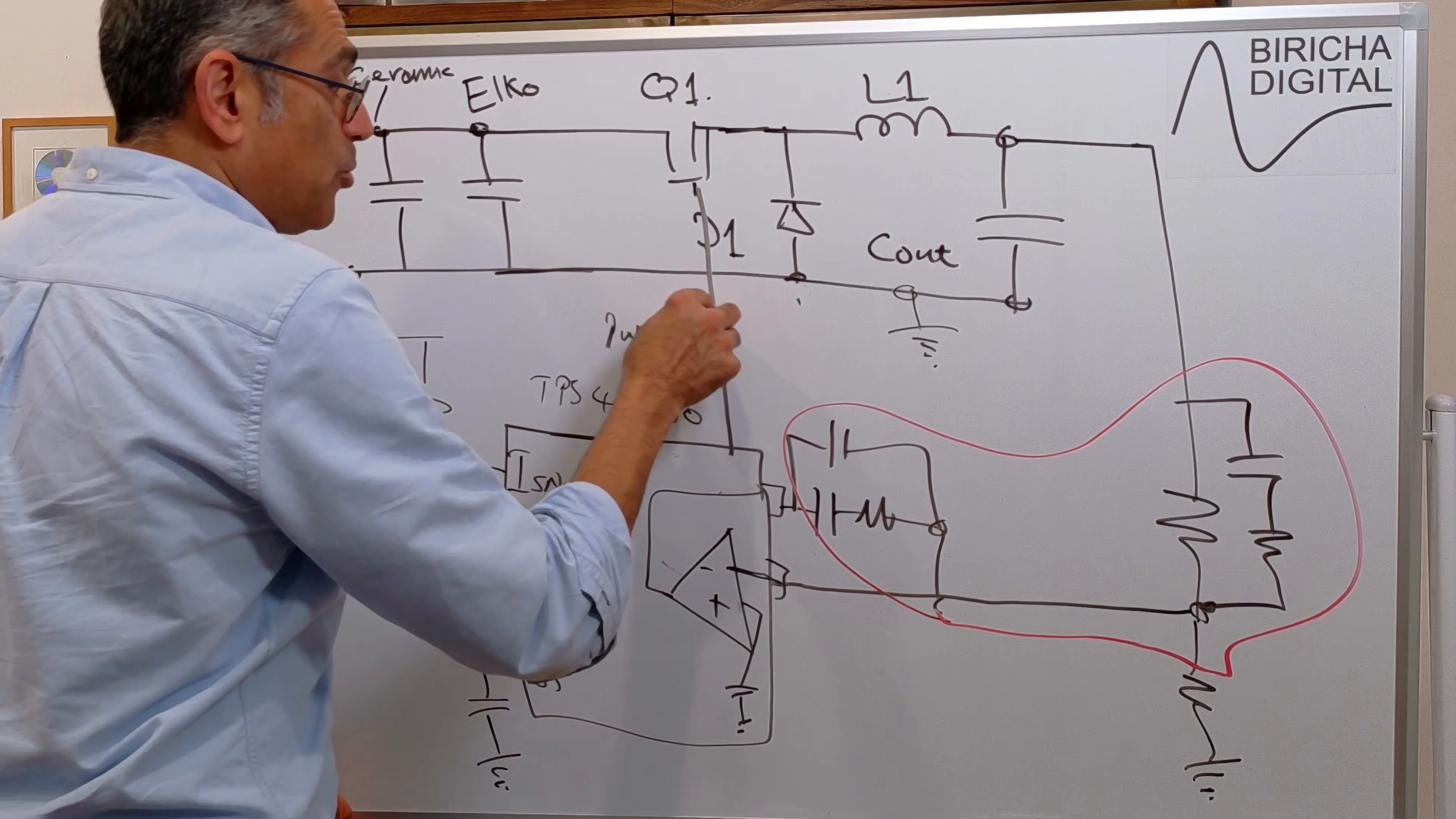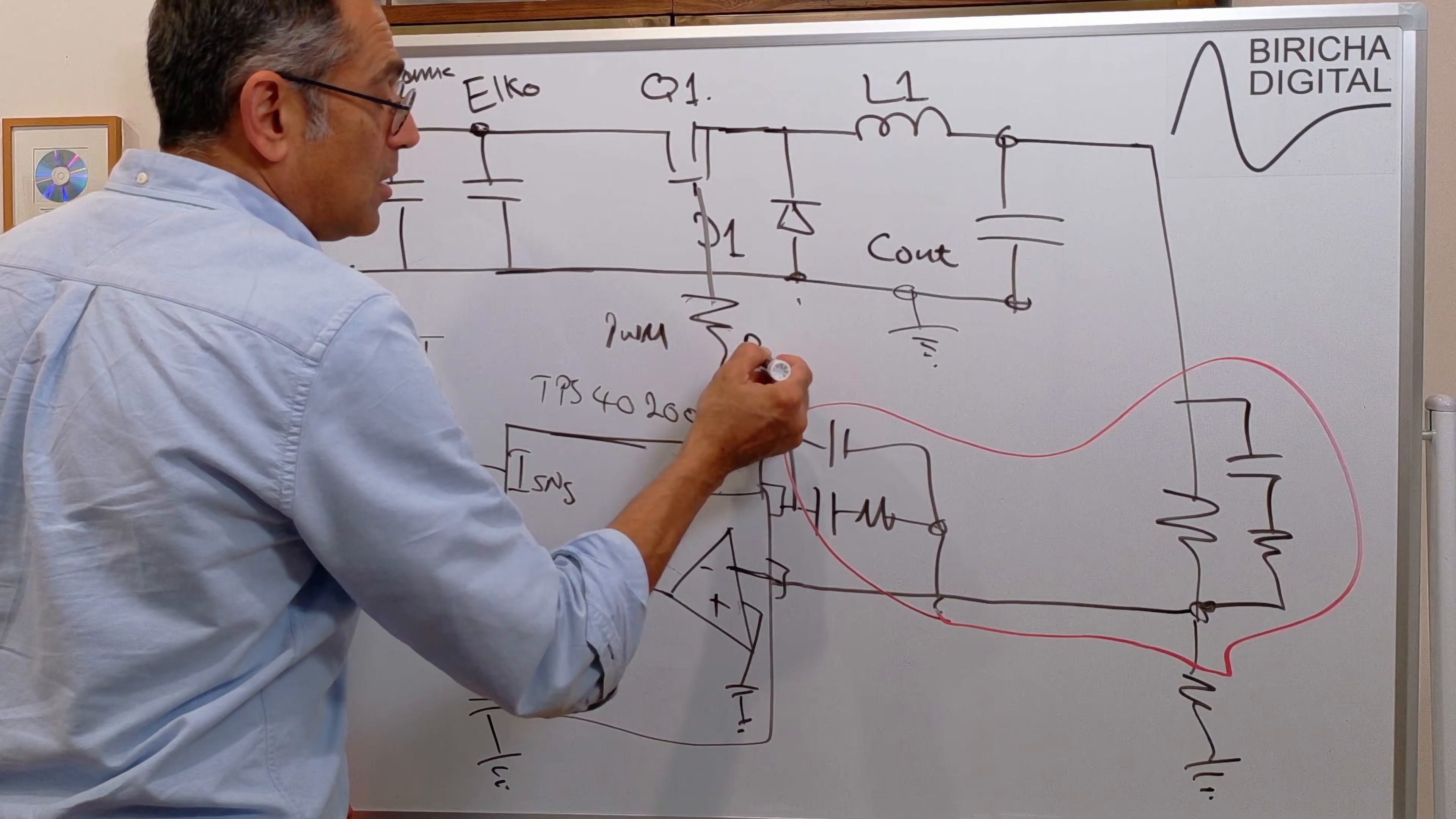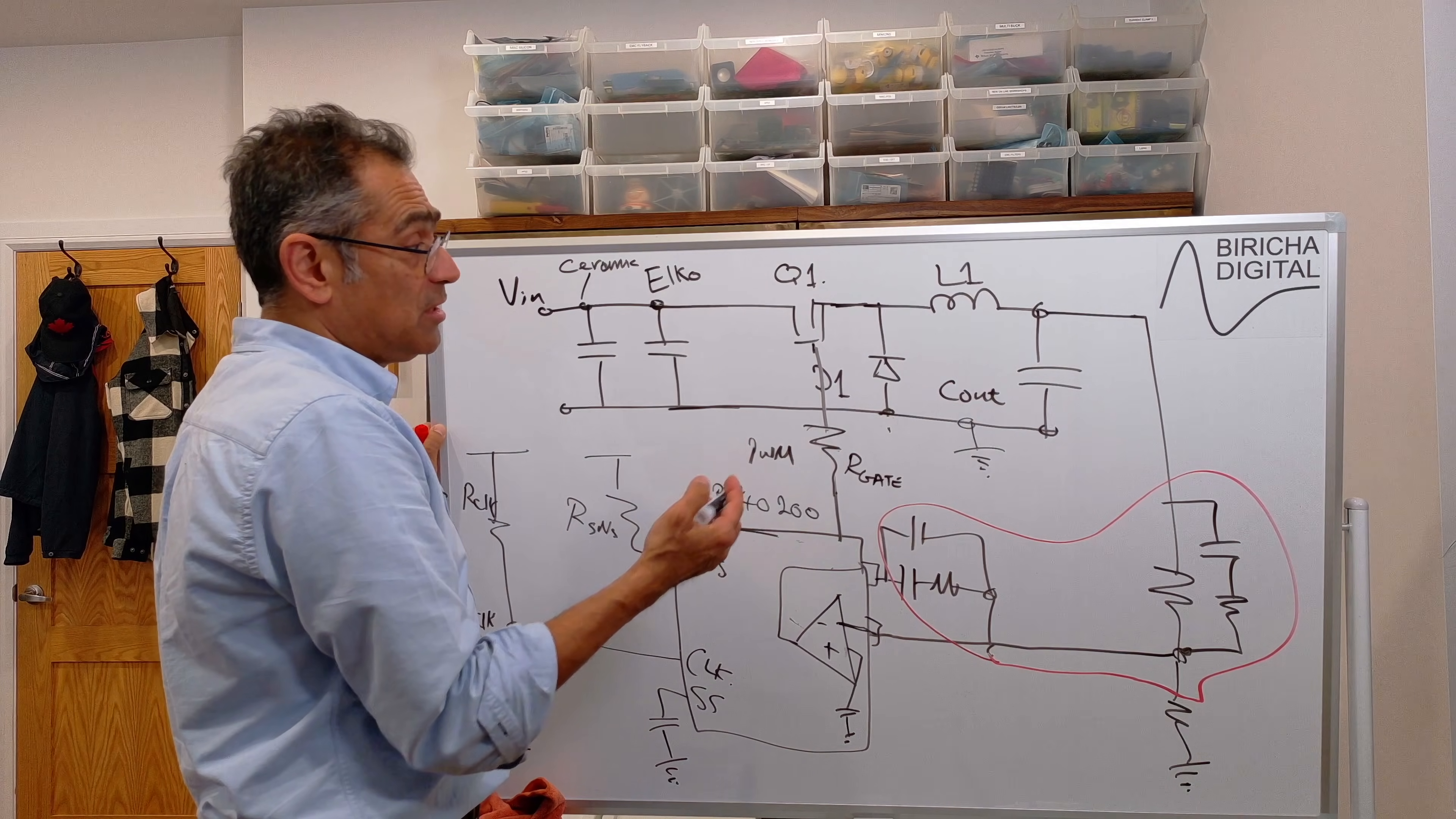And sometimes we put an extra resistor here. Our gate. That's your gate drive resistor, which slows down the FET a little bit if you need to.